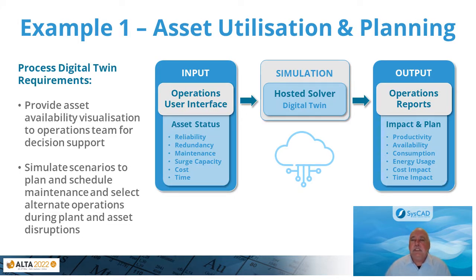This example of a digital twin provides operations with an asset utilization and planning system. The requirement of this process digital twin was to provide asset availability visualization to the operations team, to simulate scenarios for decision support, and for planning and scheduling maintenance, as well as to select alternate operations during plant and asset disruptions.